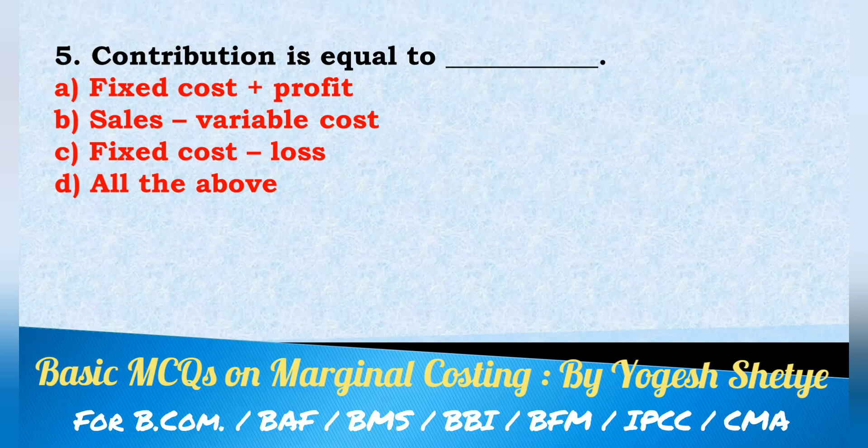Answer: all of the above. Contribution is equal to fixed cost plus profit, sales minus variable cost, and fixed cost minus loss — all of the above.